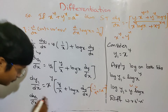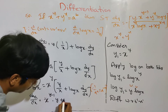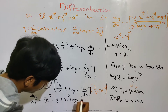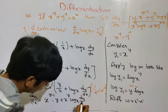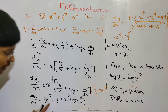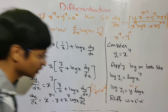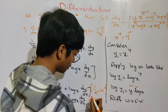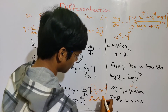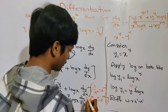So dy1 by dx equals x power y into y by x plus x power y log x times dy by dx, which simplifies using the rule a power m into a power n equals a power m plus n.